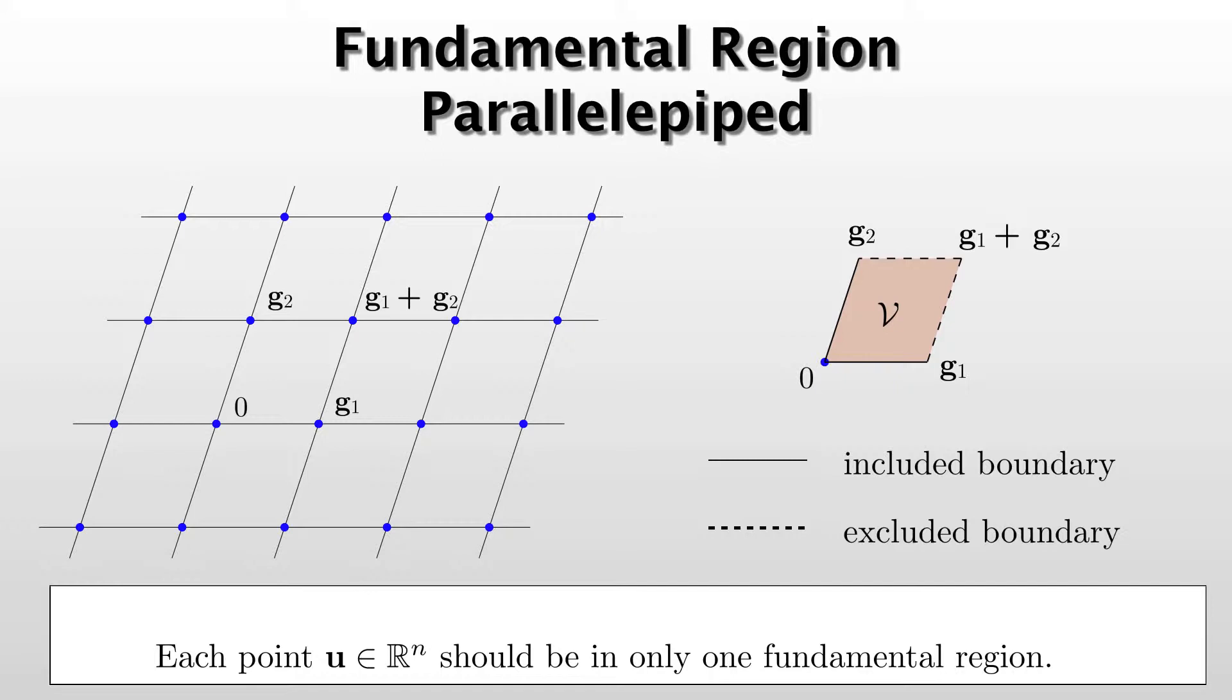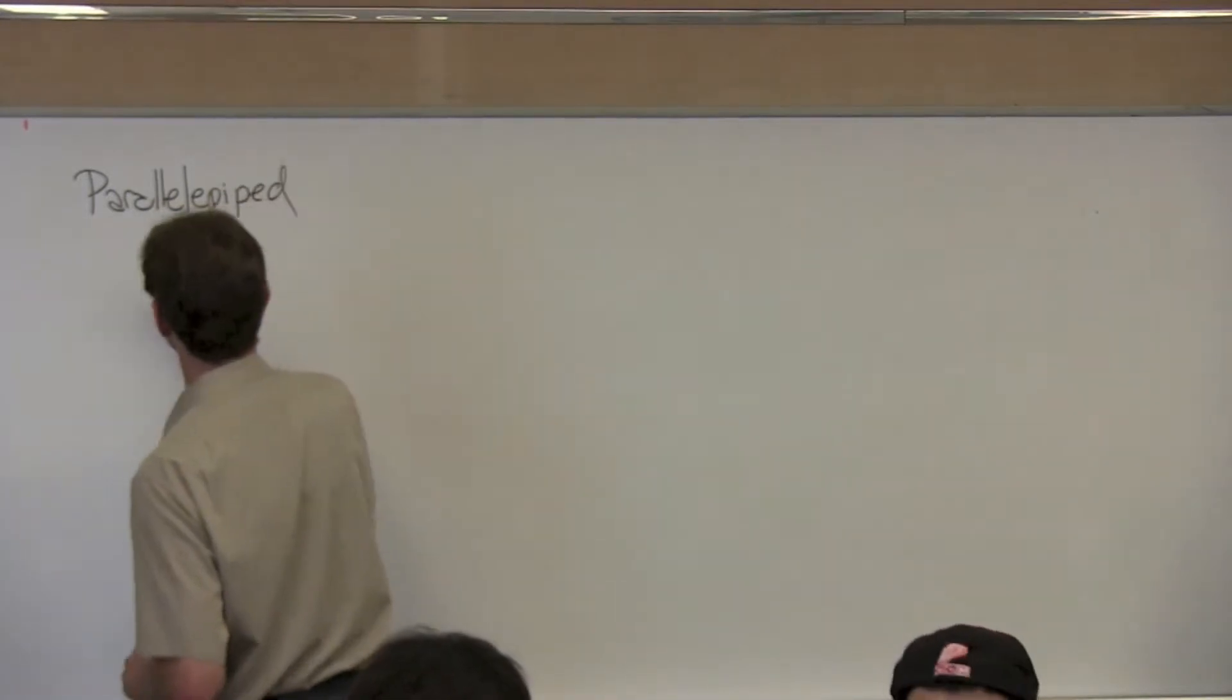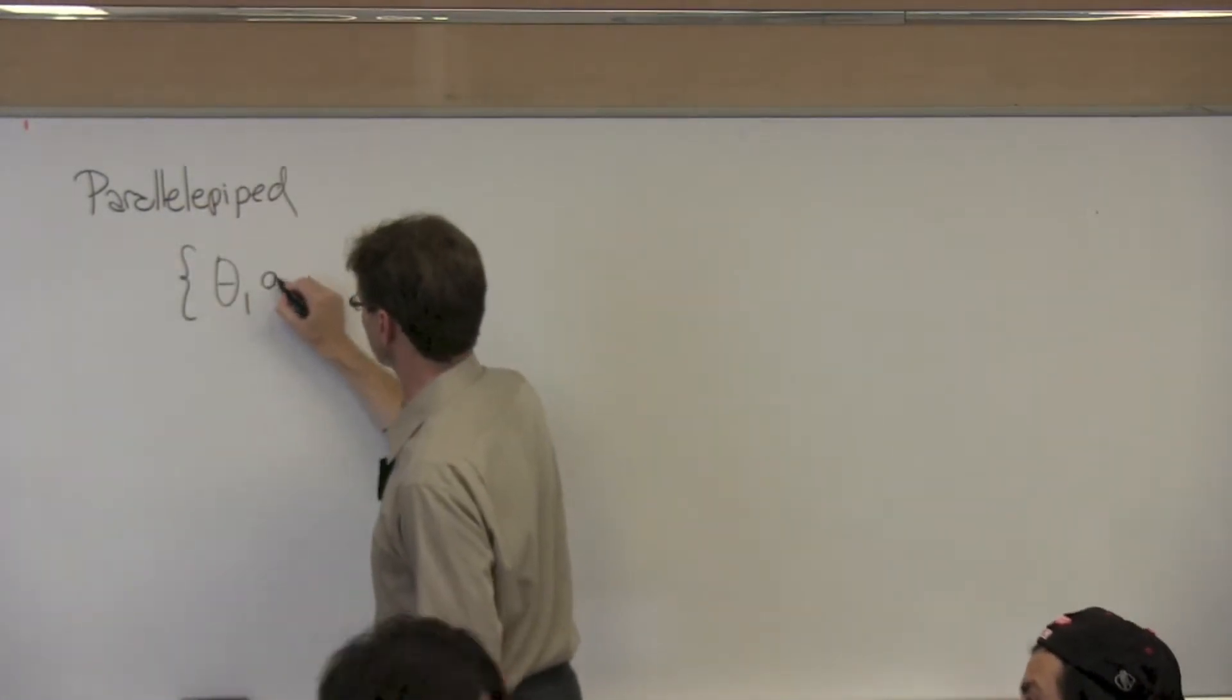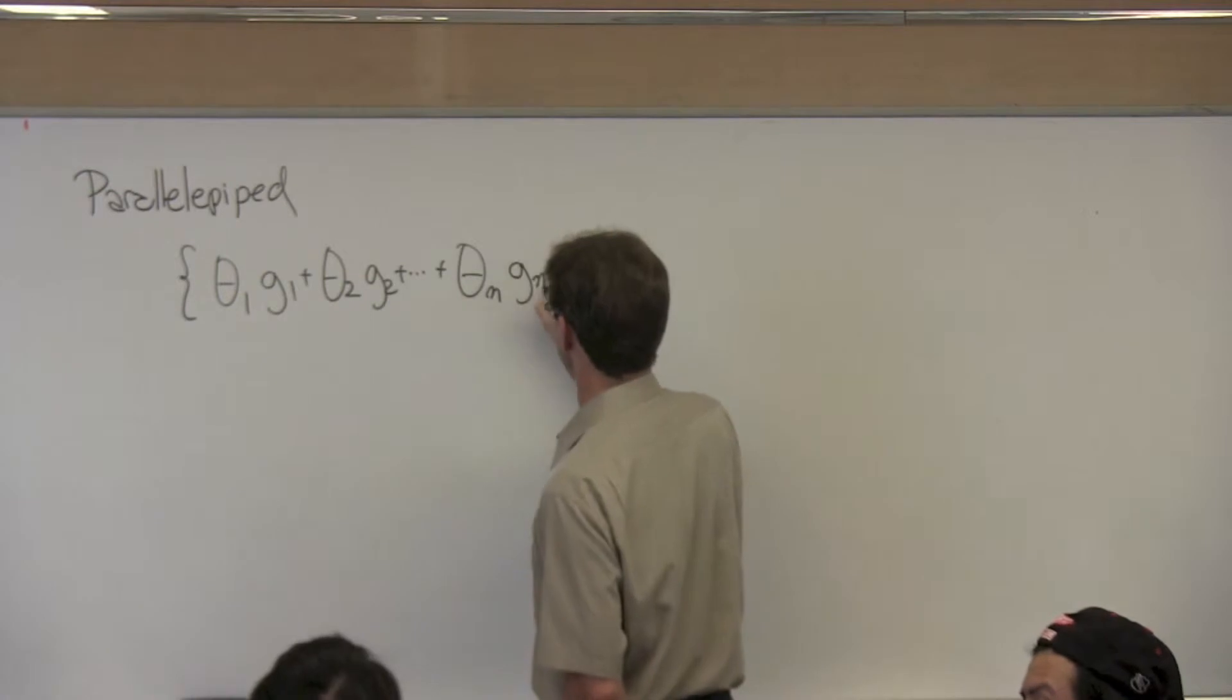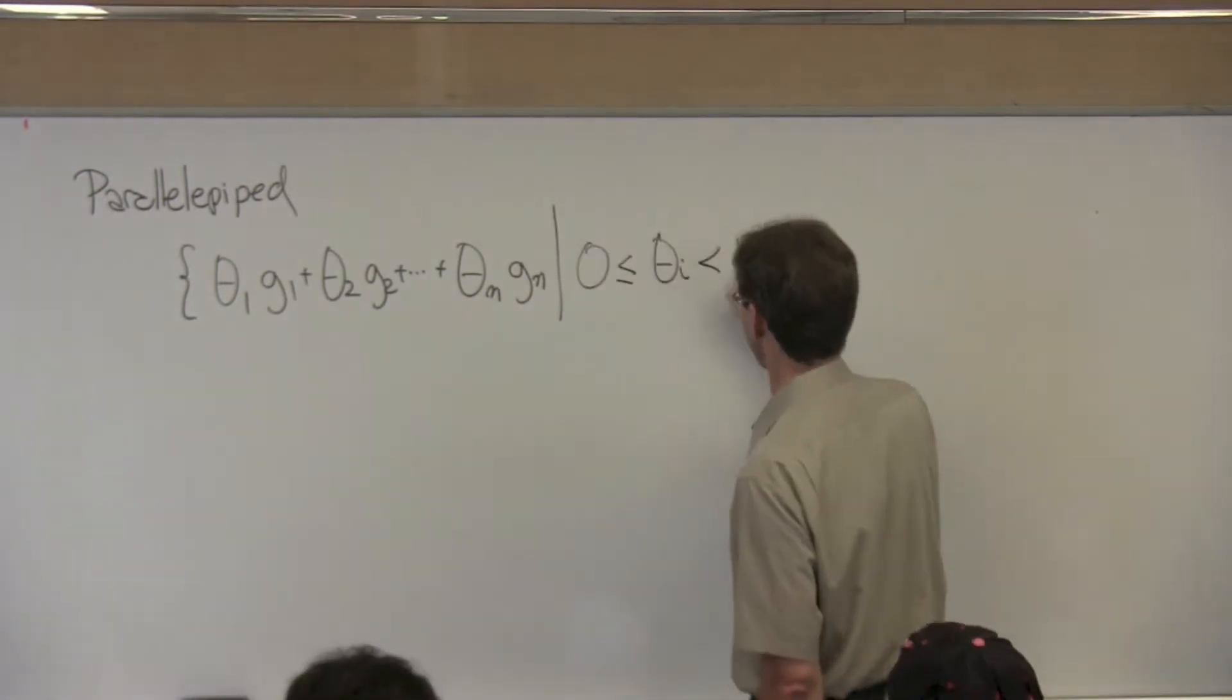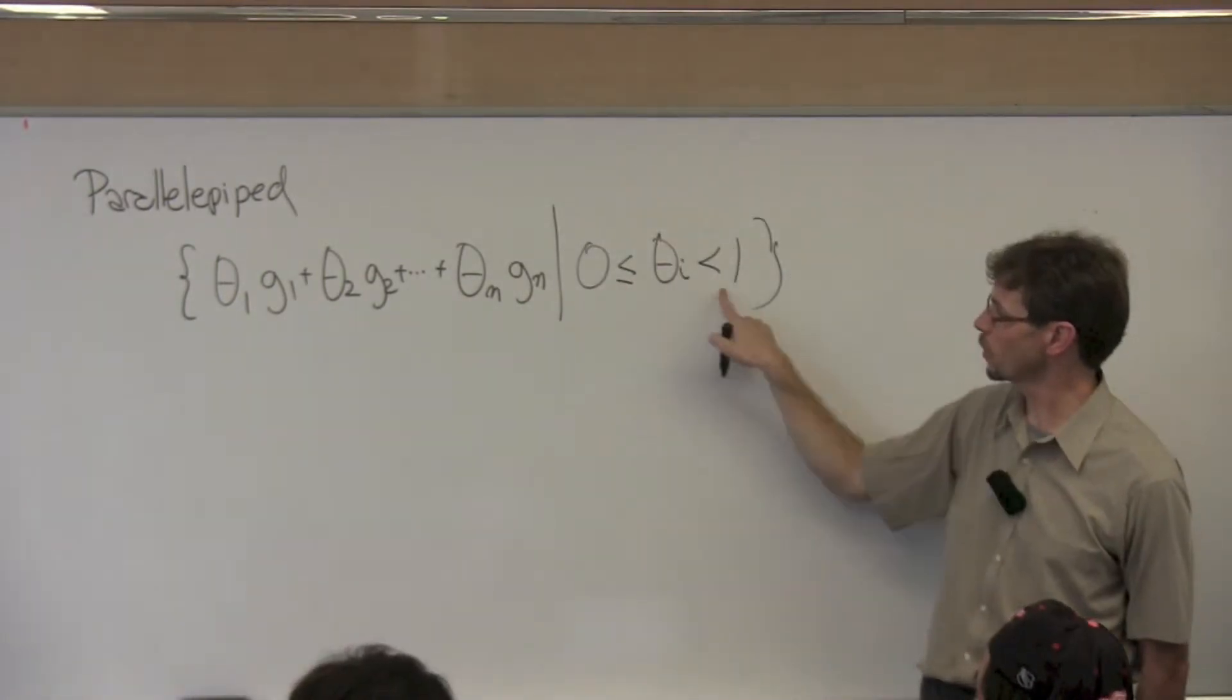So the fundamental region, the parallel piped, is the region inside of this space. The parallel piped is given as theta 1 times g1 plus theta 2 times g2, between 0 and 1, where 0 is allowed but 1 is not allowed.